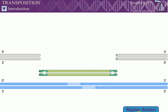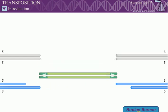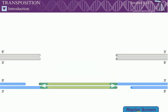Transposition is a form of genetic recombination that moves defined genetic elements, called transposable elements or transposons, from one DNA site to another. Transposition of DNA sequences can occur by either of two mechanisms: cut-and-paste transposition or replicative transposition.